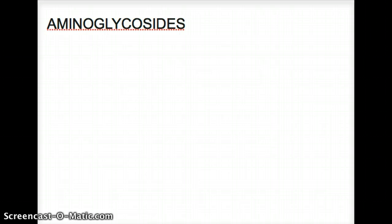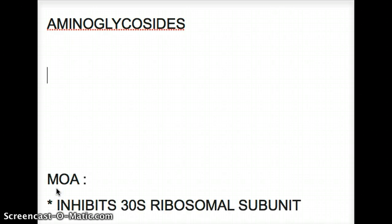What is the mechanism of action of aminoglycoside? Aminoglycoside is part of the mnemonic — if you remember, it's the protein synthesis inhibitors: 'Buy at 30, sell at 50.' It sits on the 30S or the 50S ribosomal subunit. For aminoglycosides, it sits on the 30S ribosomal subunit, and it prevents any kind of translation from continuing. So the first mechanism of action: it inhibits the 30S ribosomal subunit.